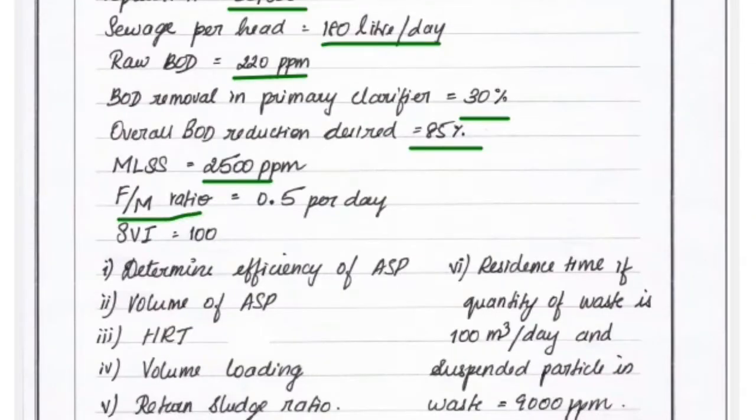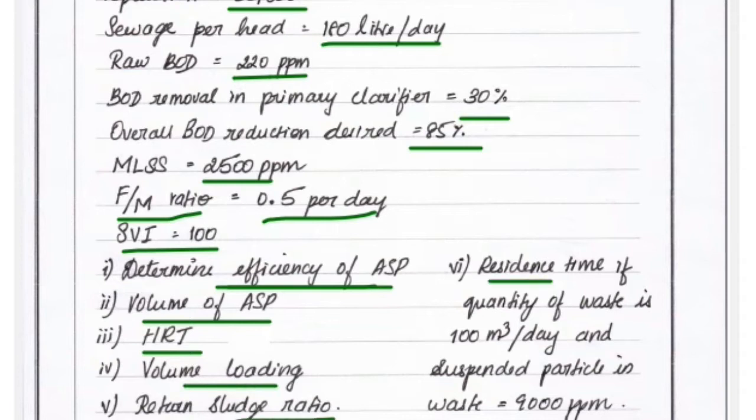FM ratio is 0.5, that is food per microbial mass equals 0.5 per day, and sludge volume index equals 100. We have to find out the efficiency of activated sludge process, volume of ASP, HRT that is hydraulic retention time, volume loading, retention sludge ratio, and resident time that is sludge age if the quantity of waste is 100 meter cube per day and suspended particles in waste is 9000 ppm.